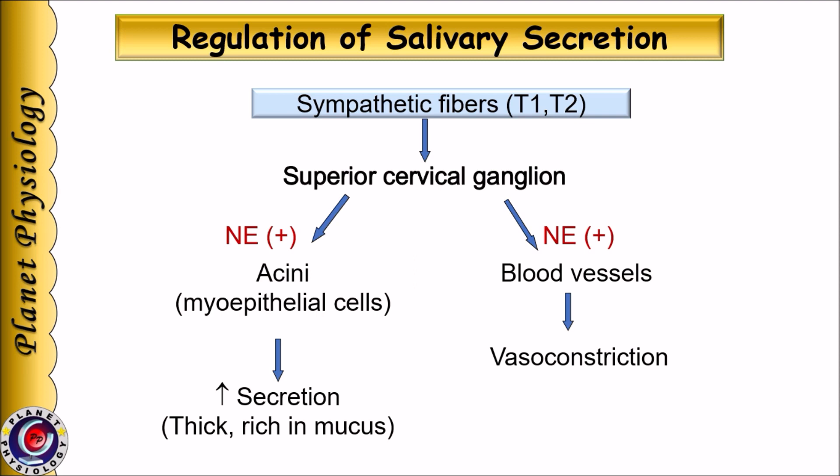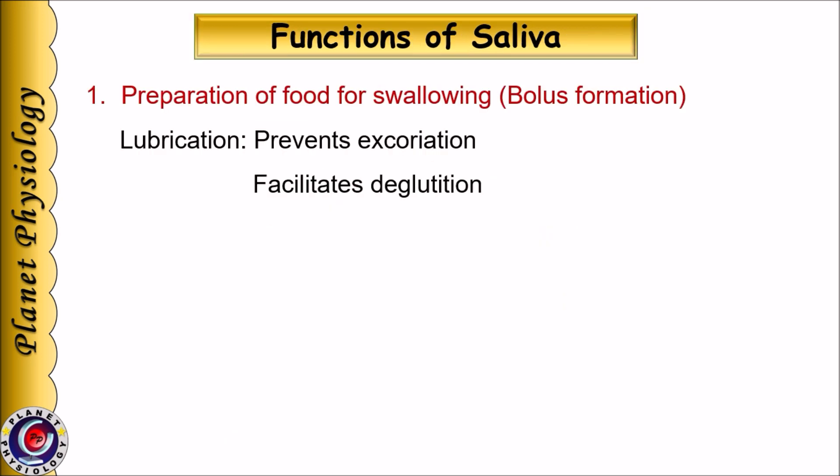Preganglionic sympathetic fibers from the first and second thoracic segments of the spinal cord terminate in the superior cervical ganglion. Postganglionic sympathetic fibers travel along the blood vessels and innervate the salivary glands. Sympathetic stimulation causes contraction of myoepithelial cells and increases salivary secretion, but at the same time causes vasoconstriction and decreased blood flow to the salivary gland. As a result, saliva secreted in response to sympathetic stimulation is less watery and rich in mucin.